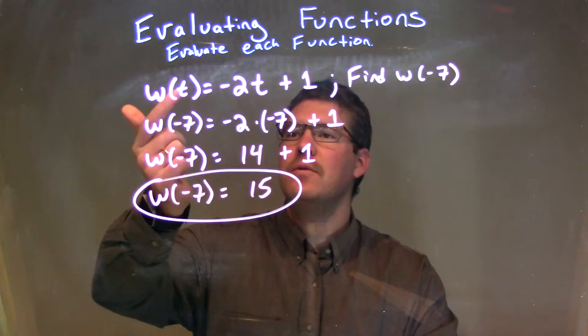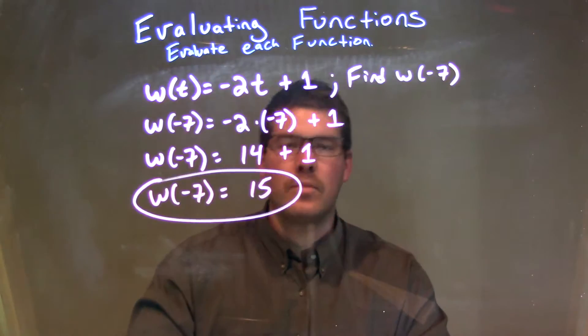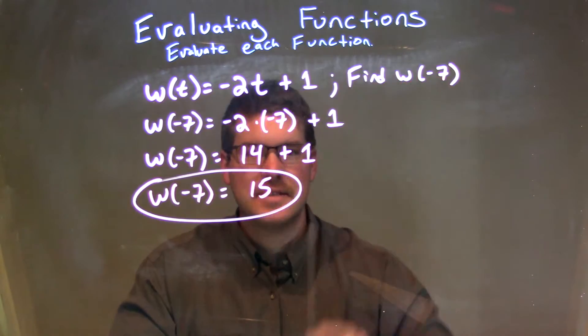Let's recap. We're given w of t is equal to negative 2t plus 1, and we had to find w of negative 7.